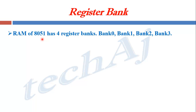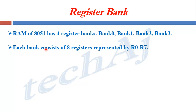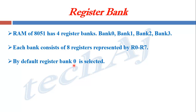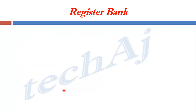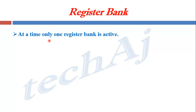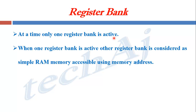Key points of the register bank: The RAM of 8051 has 4 register banks — bank 0, bank 1, bank 2, and bank 3. Each register bank consists of 8 registers represented by R0 to R7. By default, register bank 0 is selected whenever the microcontroller is reset. We can select any other register bank using the register bank select bits RS0 and RS1 of the PSW register, which is also called the Program Status Word. At a time, only one register bank is active. When one register bank is active, the other register banks are considered as simple RAM memory, accessible using the memory address.